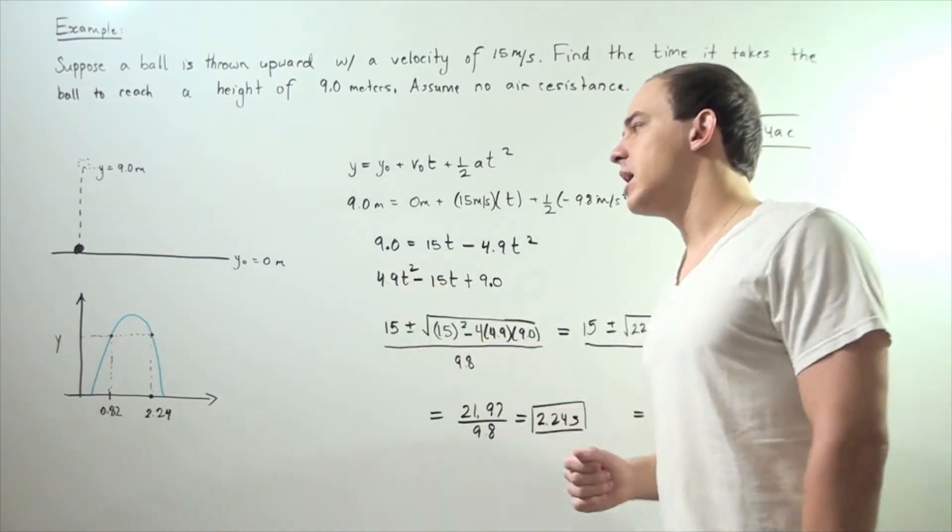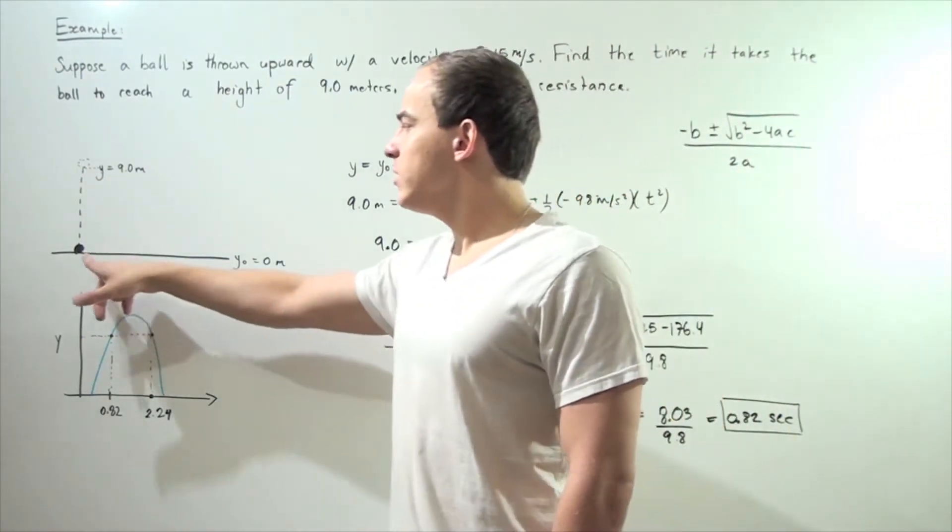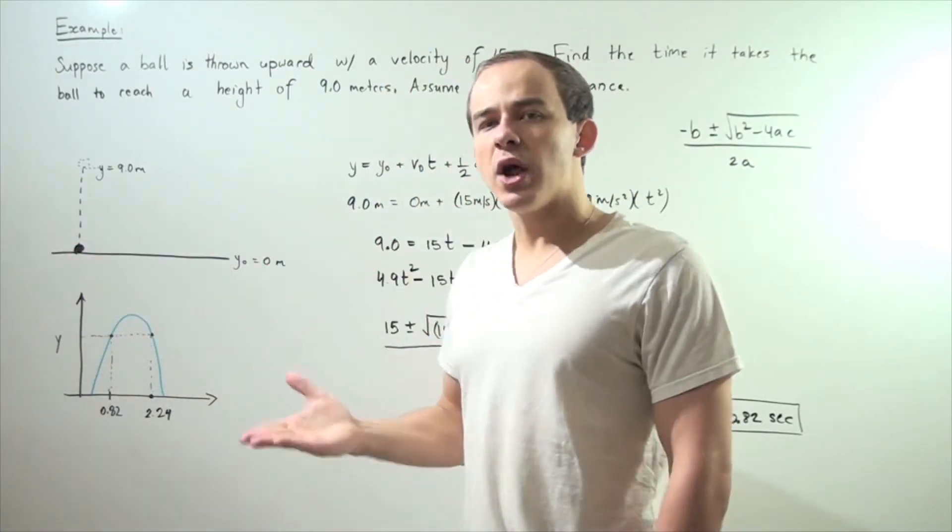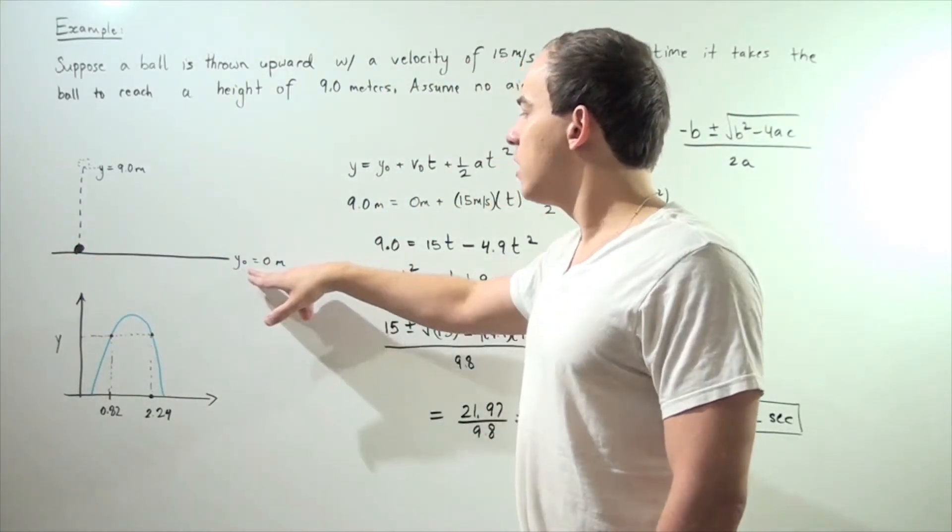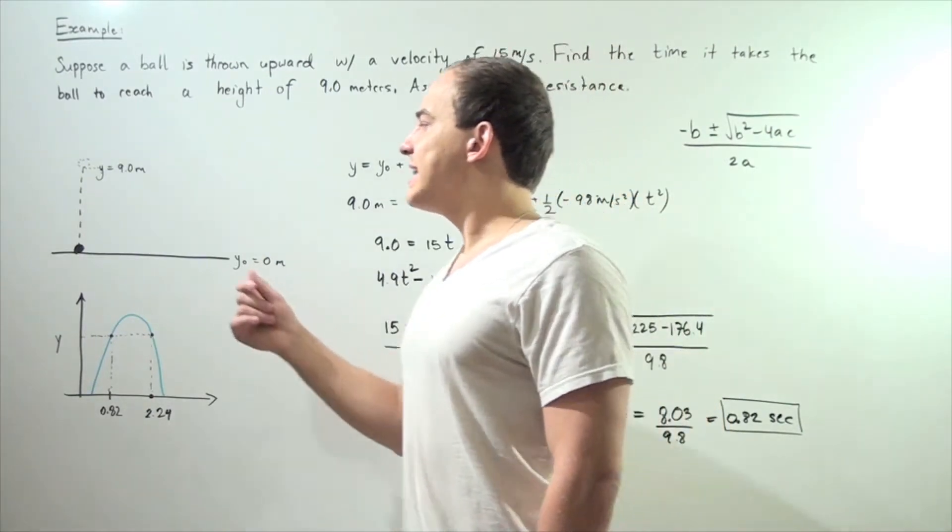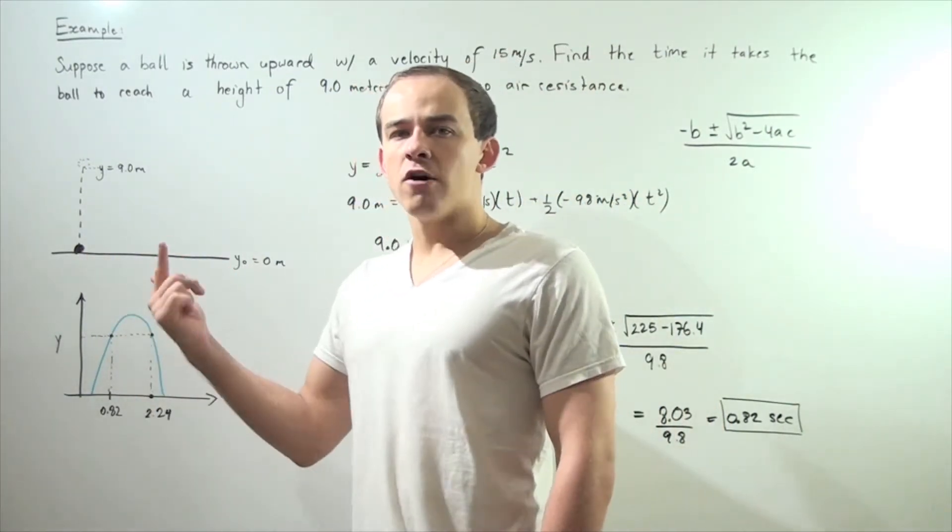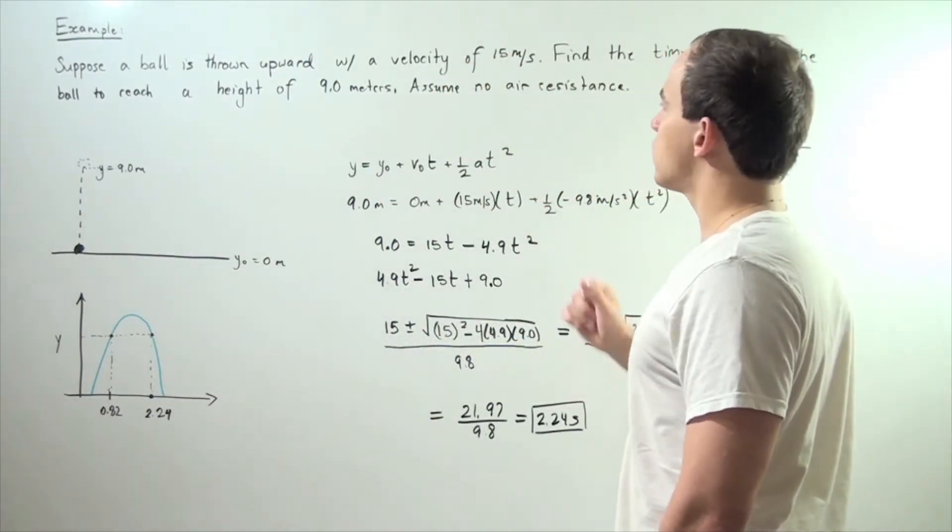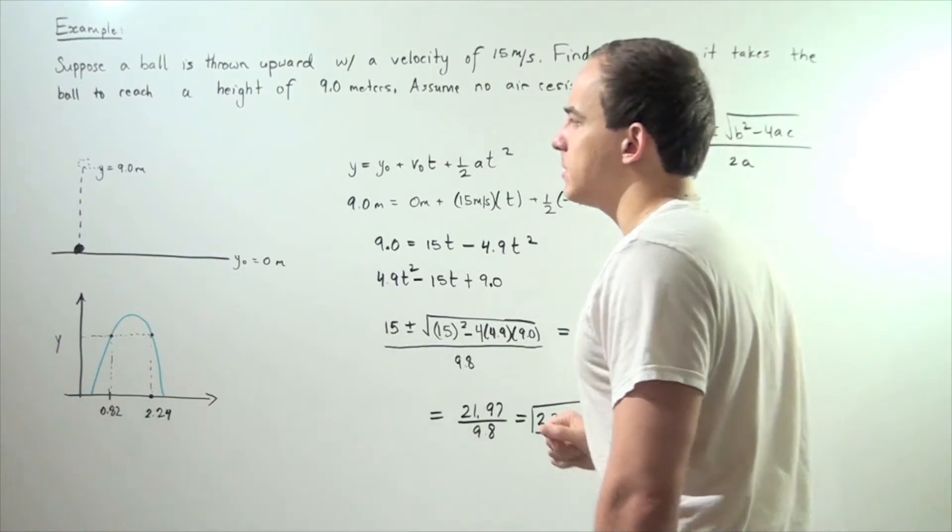So let's look at our diagram. Here we have the ball and here we have our ground. We set the ground to be a position of 0 meters, so our y-naught is 0 meters. Now the ball initially blasts off with some velocity given here, 15 meters per second, so our v-naught is 15 meters per second.